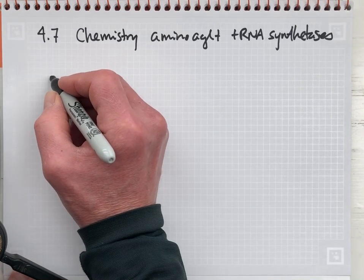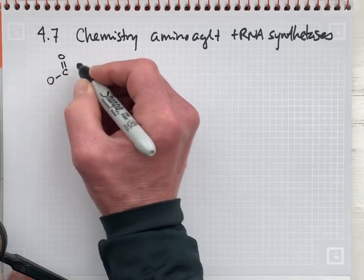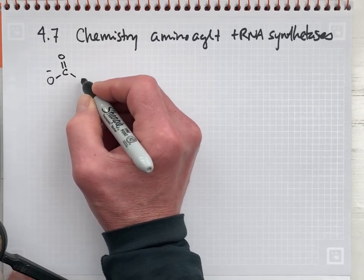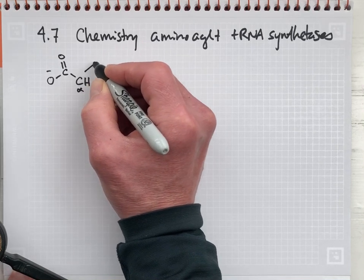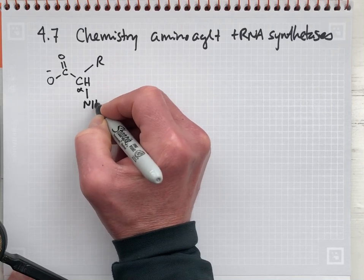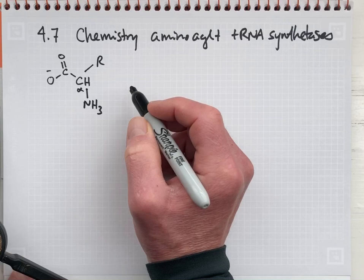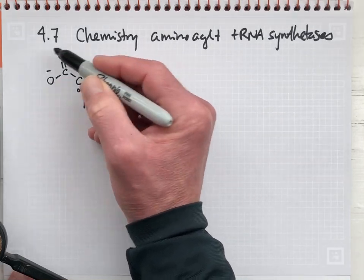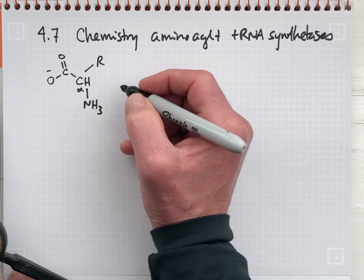We'll begin by looking at the chemical structure of amino acid with its carboxylate functional group, alpha carbon, side chain, and amino group. And we need to activate the chemical potential energy of this carboxylate in order to make peptide bonds.